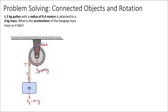To find the acceleration of the hanging mass, we use Newton's second law for translational motion on the hanging mass. Defining downward as the positive direction, the sum of forces is mg minus tension, which equals the mass of the hanging mass (little m) multiplied by acceleration A.